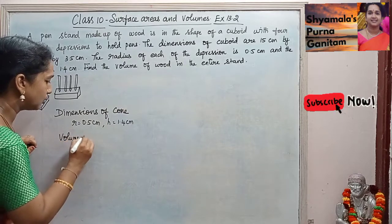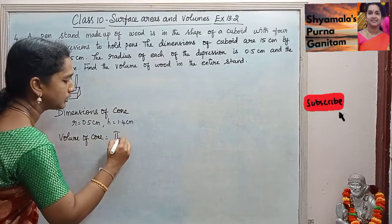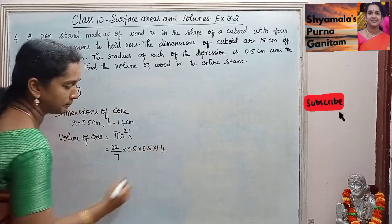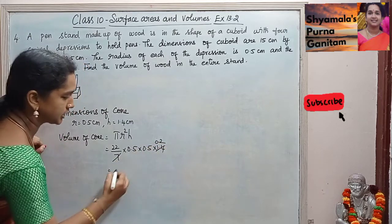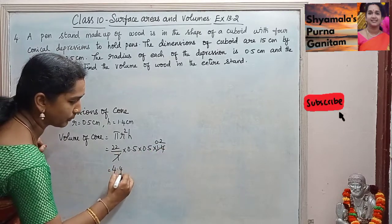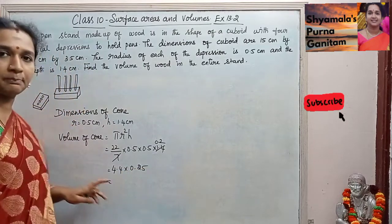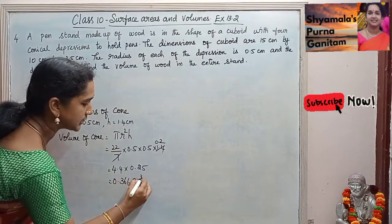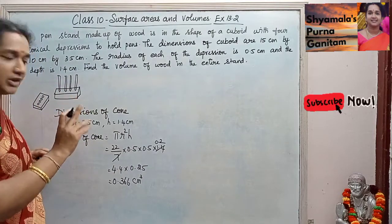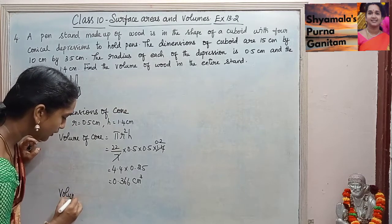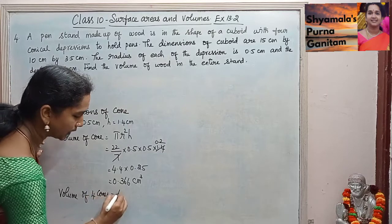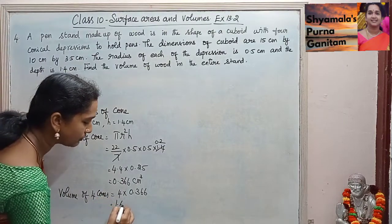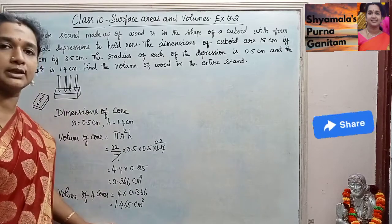Volume of the cone is equal to (1/3) pi r squared h. So 22/7 into 0.5 into 0.5 into 1.4, which gives approximately 0.366 cm cube. This is the volume of 1 cone. Like that we are having 4 cones, so volume of 4 cones is equal to 4 into 0.366, which gives 1.465 cm cube.